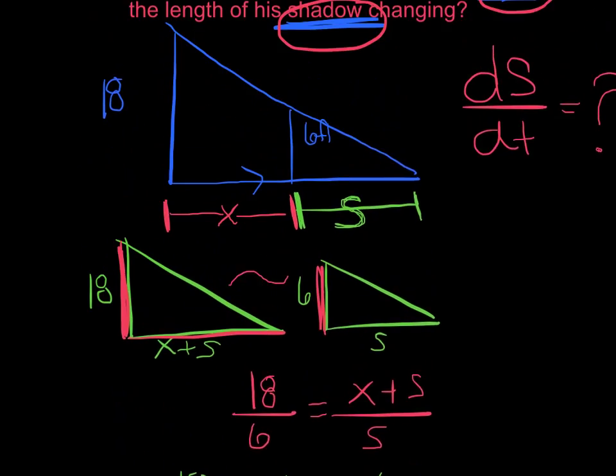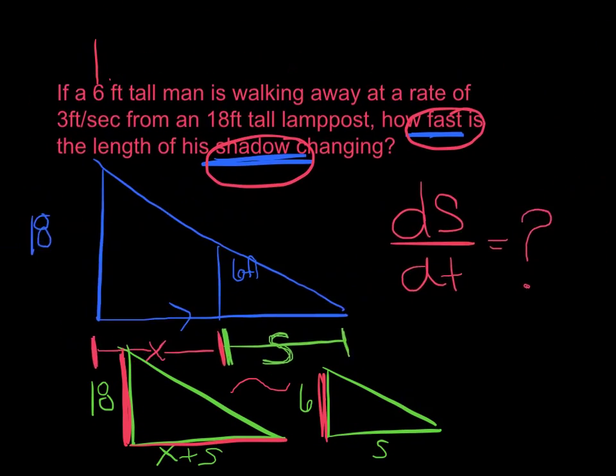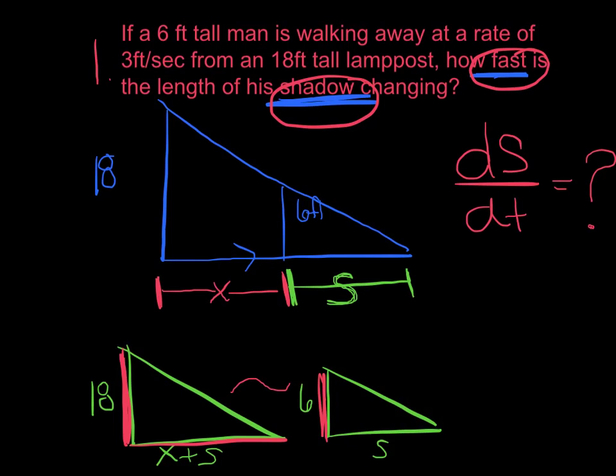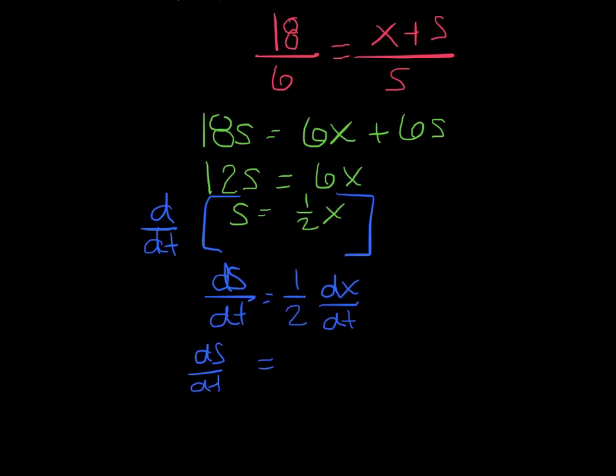And again, I was looking for ds/dt. Do I know what dx/dt is? Well, let me just scroll back real quickly. That represented the rate that the distance between the lamppost and the man. And they told us that this guy was walking at a rate of 3 feet per second. So I know my dx/dt is 3.